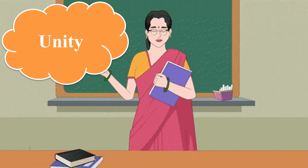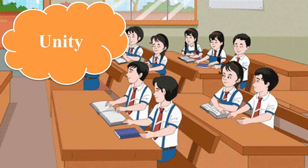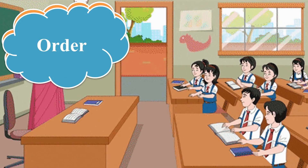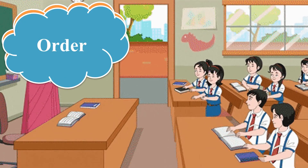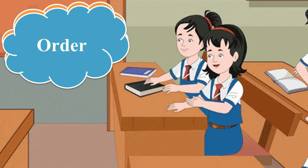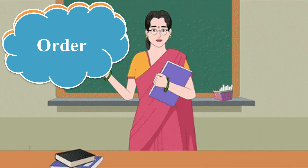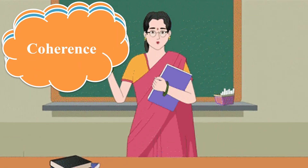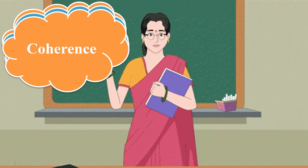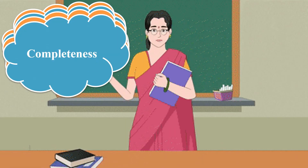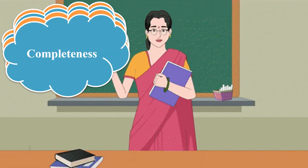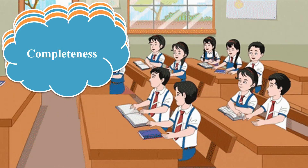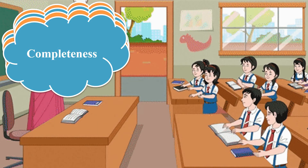Unity means all the sentences must be united — they all must be about the topic. Order means they all must be in proper order: first it must start with a beginning, then complete the body, and at last it should have an end. Coherence means they all must be related and flow one by one. Completion means those sentences must be completed as a whole — it should not appear that you have left something.